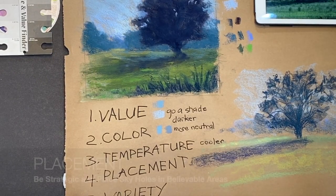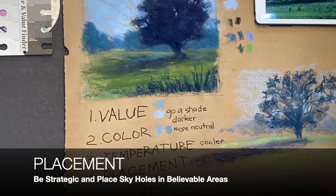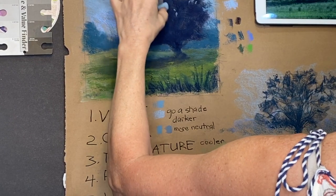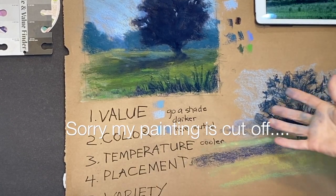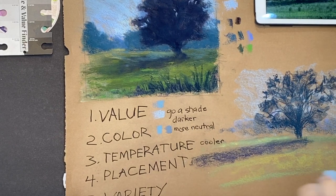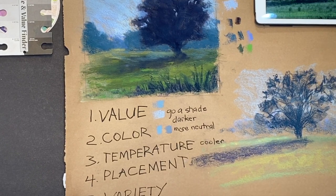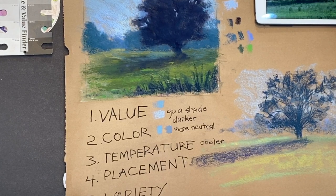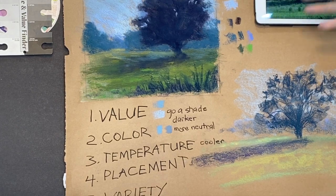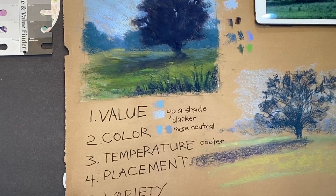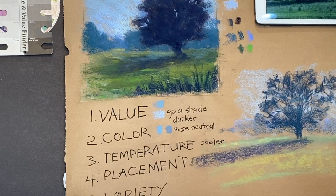Step four: placement. We don't want to go willy-nilly into the tree. One way to determine placement is to squint your eyes. When I squint and look at this tree I can see where the shapes are concentrated, and I need to place most of my negative shapes in those areas. You have some artistic license, but when first learning it's a good idea to place them where they actually appear.